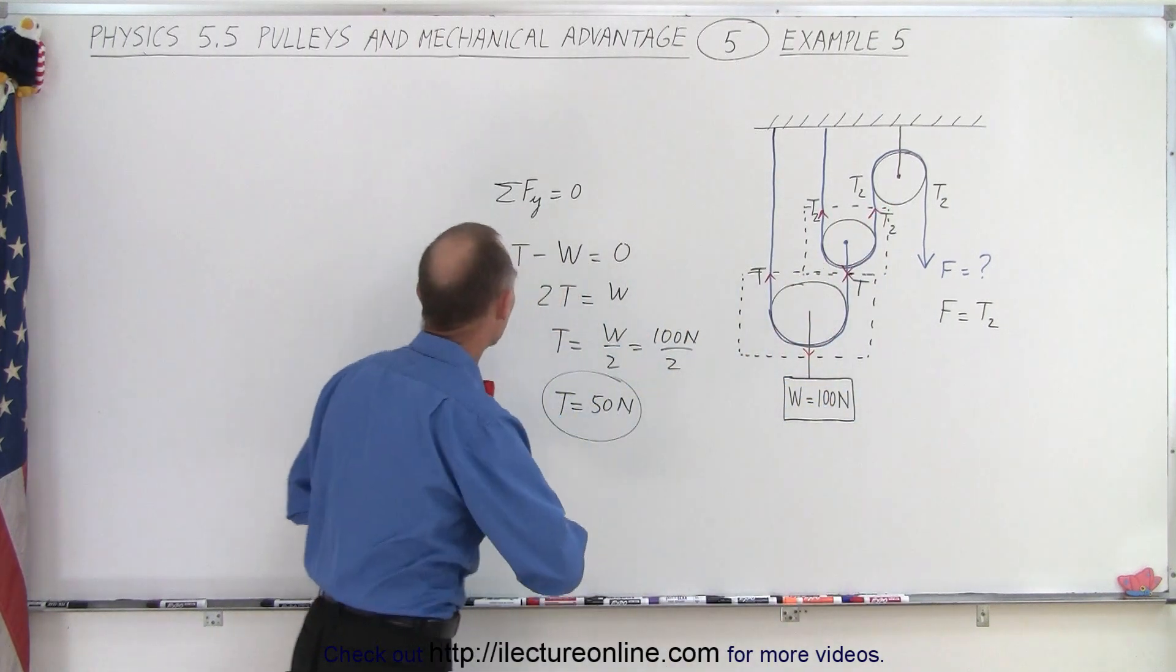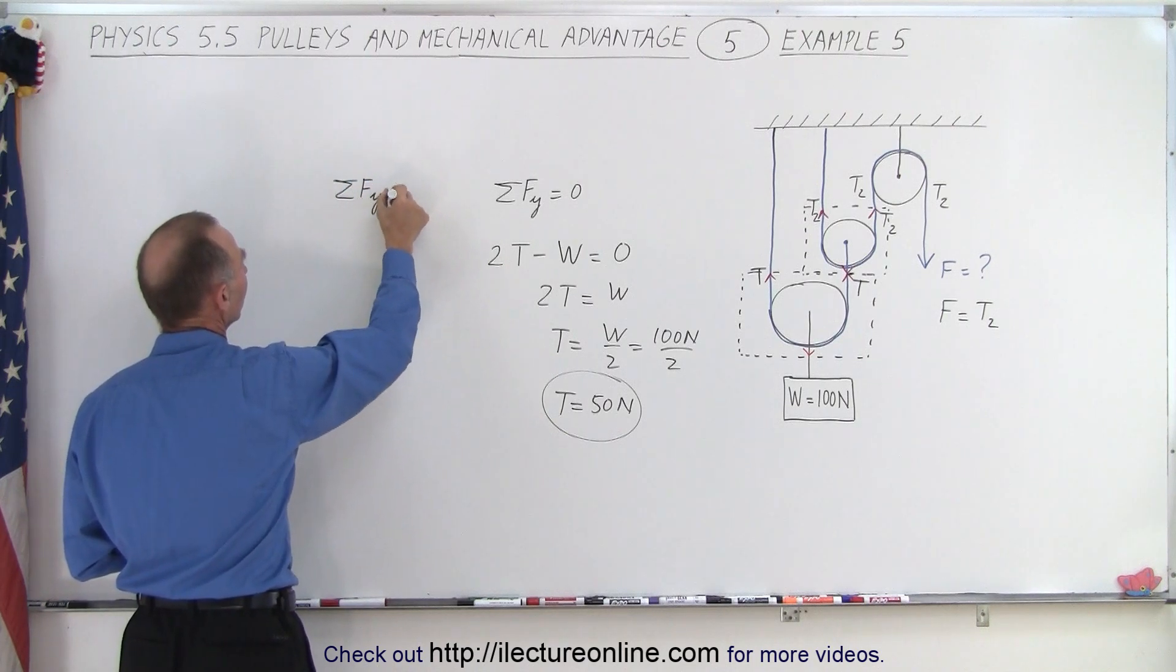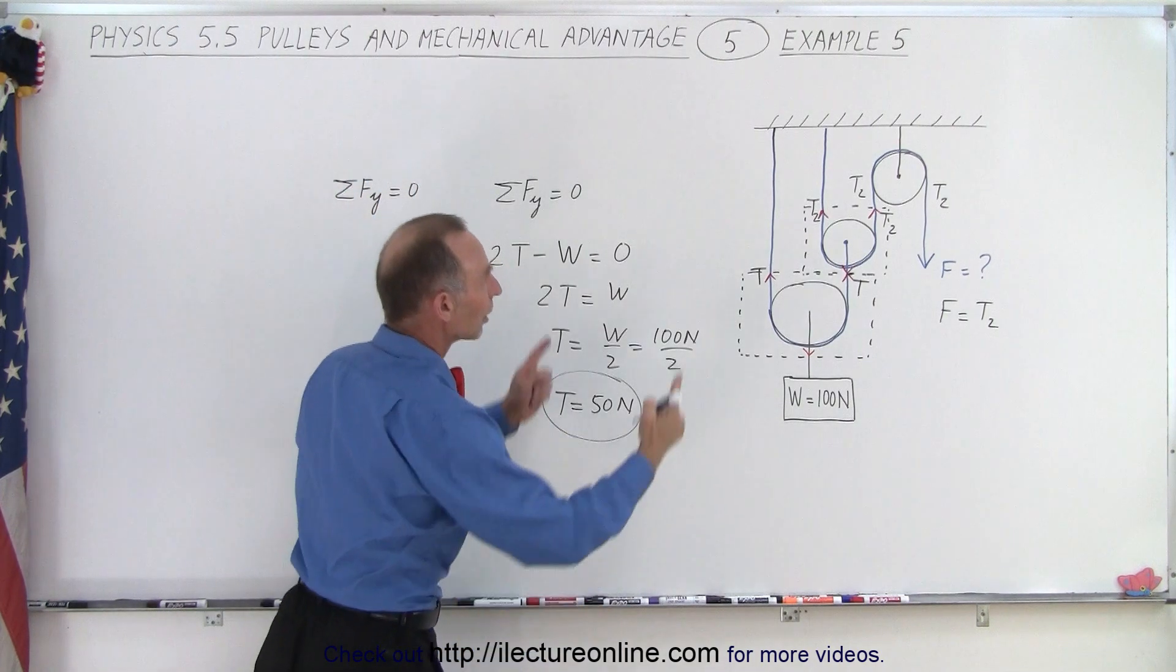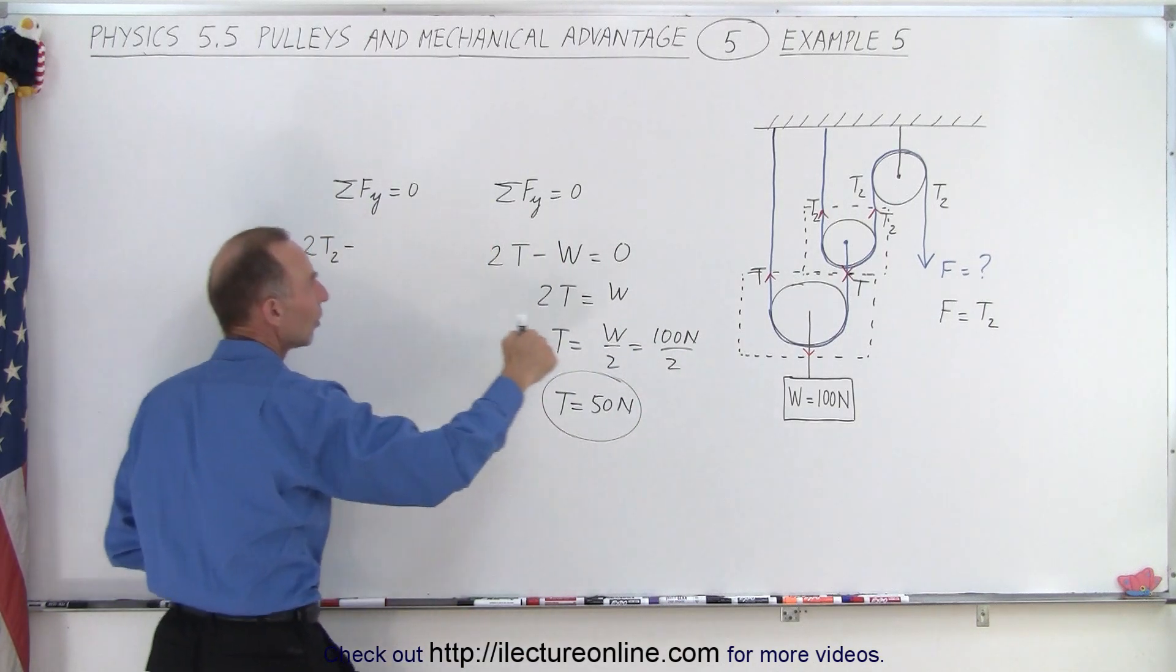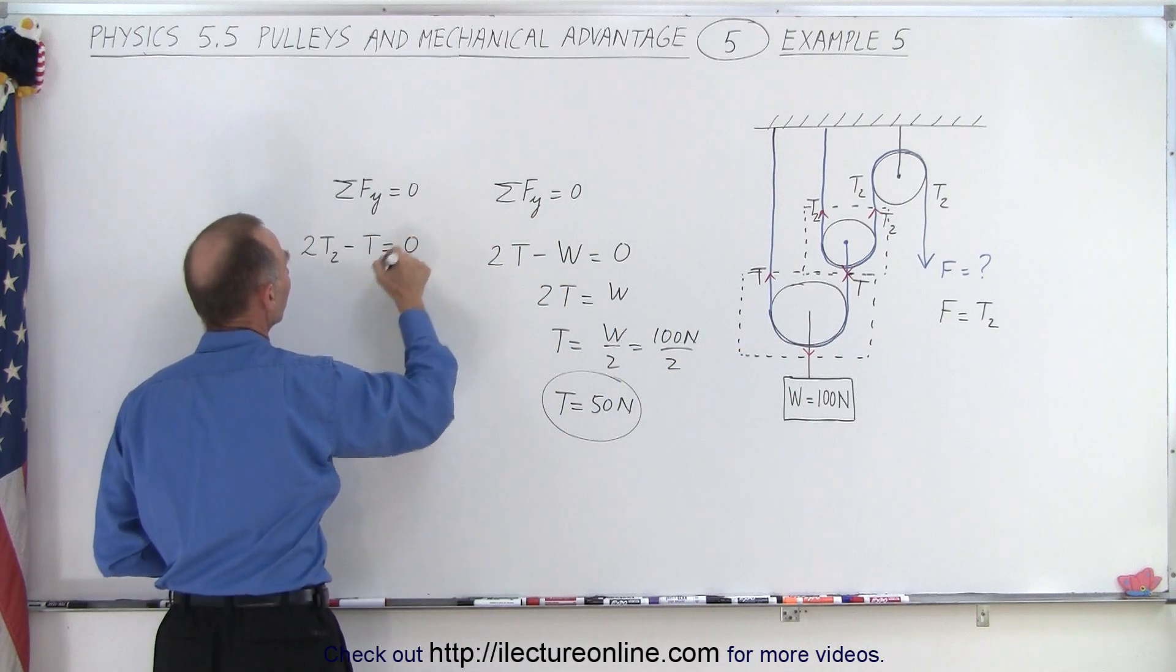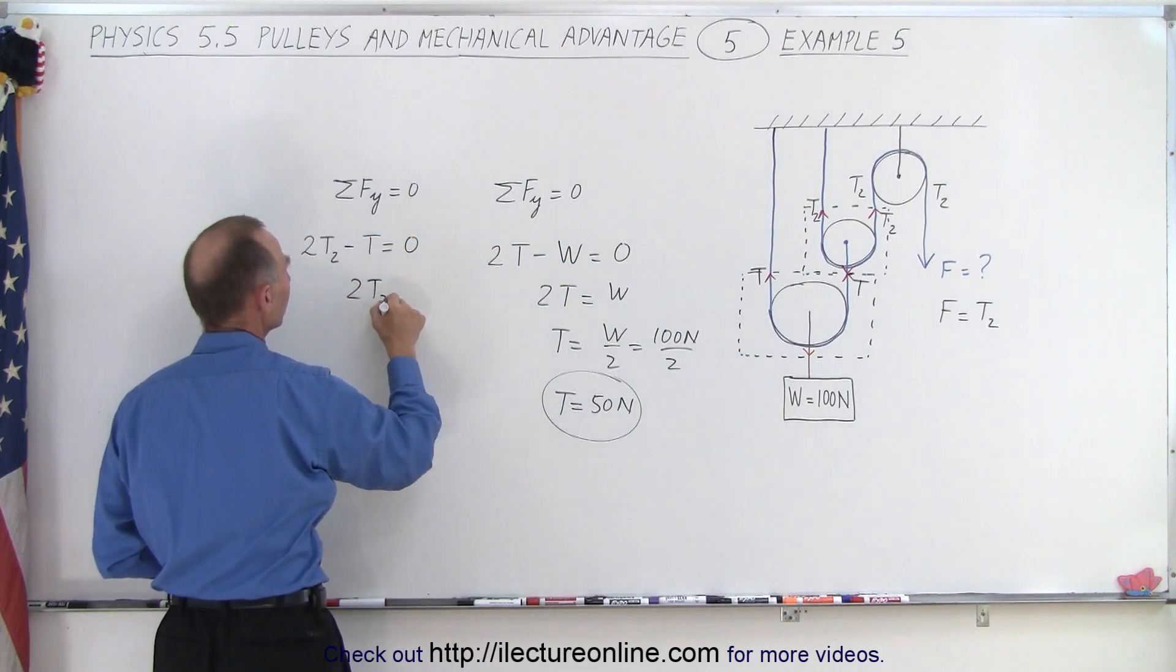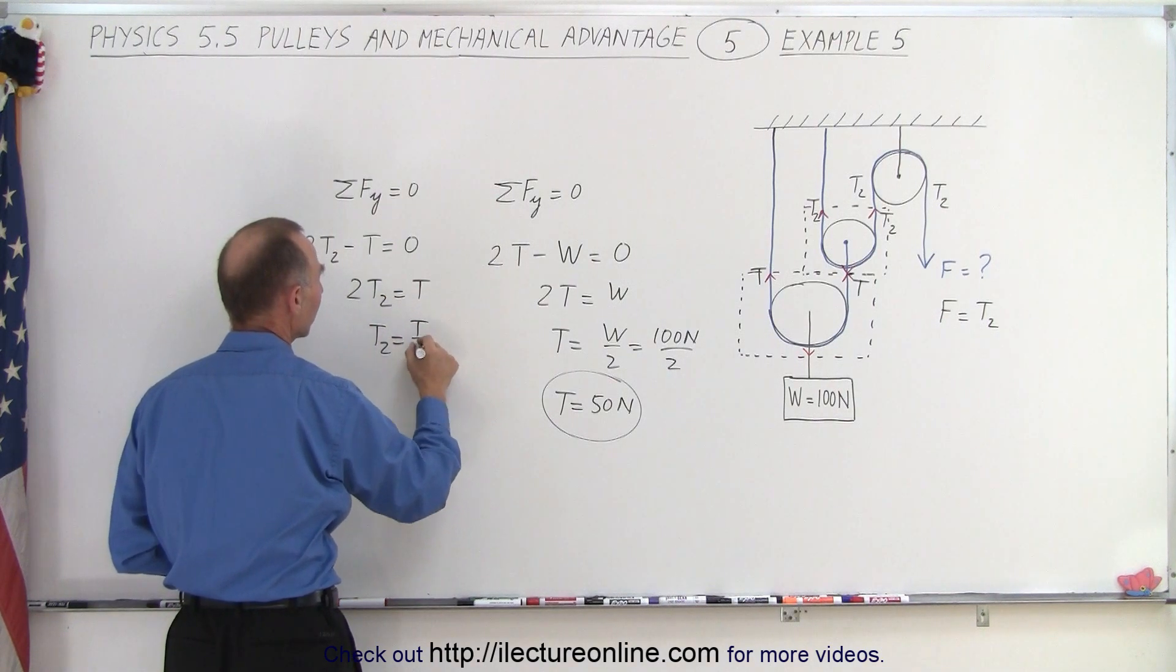That means again we use the same equation, the sum of the forces in the y direction add up to zero. So the two forces pulling upward is T2, we have two of them so 2 times T2 pulling upward minus the one T pulling downward is equal to zero, which means that 2T2 equals T, or T2 equals T divided by 2.